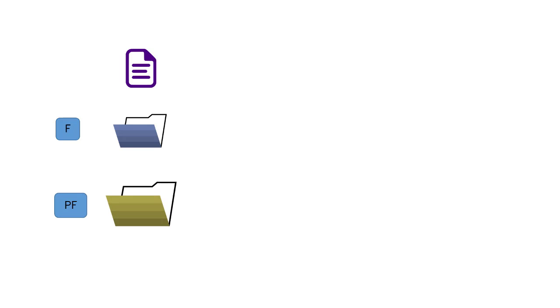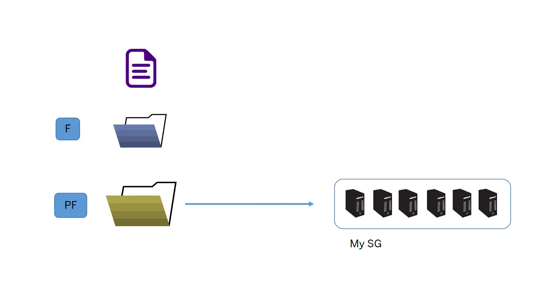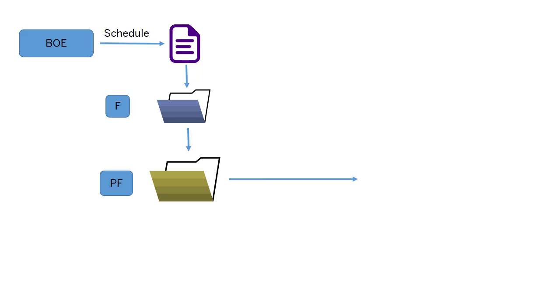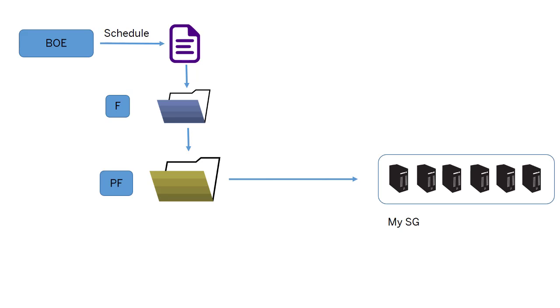Consider a condition where a document is in a folder f that is in turn a part of a parent folder pf. Only pf is mapped to a server group mysg and is set as required. When you schedule the document, the BOE checks for server group assignments at the document level first. Failing to find any, it goes ahead to f and then to pf. As pf is mapped to mysg, the BOE looks for servers only in mysg. If there is no server group assigned to pf, then the BOE proceeds to check at the user group level.